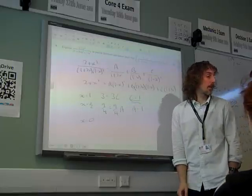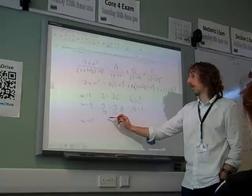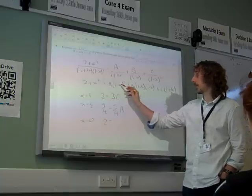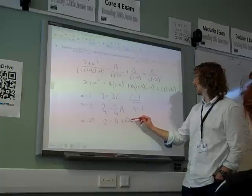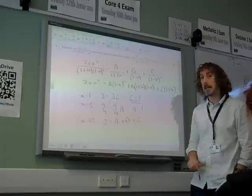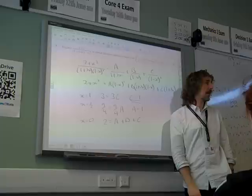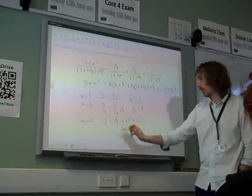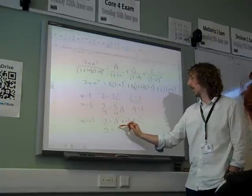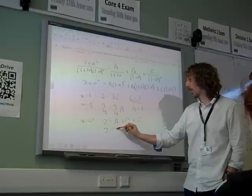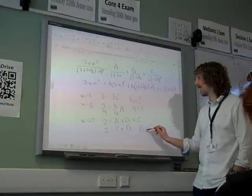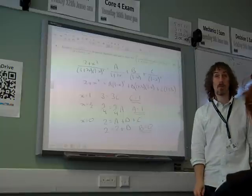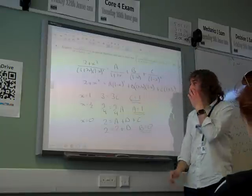Let's pick any other value that we like. 0, for example. So 2 is a plus b plus c. Well, hang on. If a and b are both 1, then we've got 2 equals... If a and c are both 1, that's 2 plus b. So b did turn out to be 0 after all. So there we go. We've got b from 0 after that.